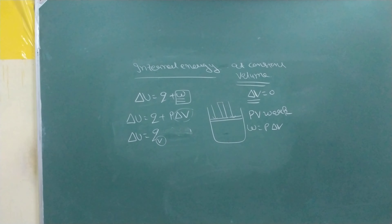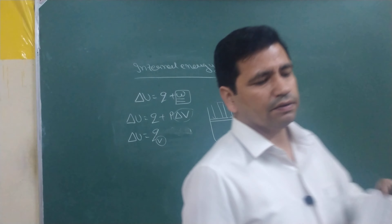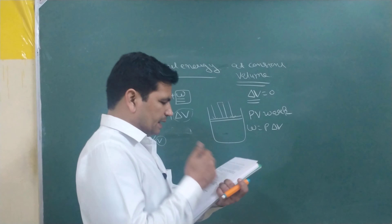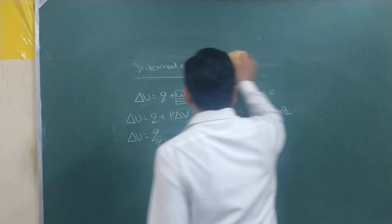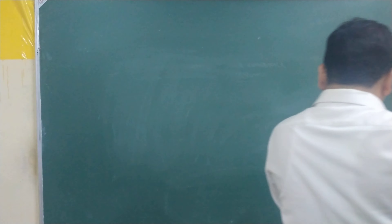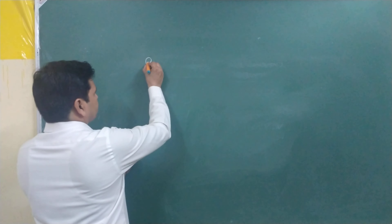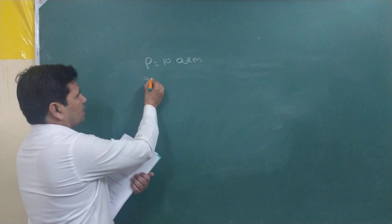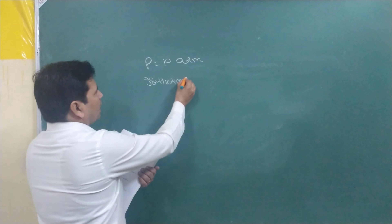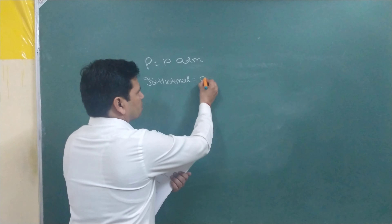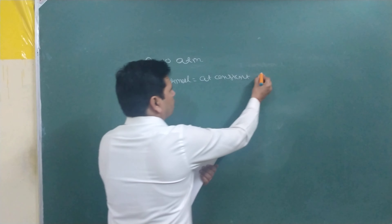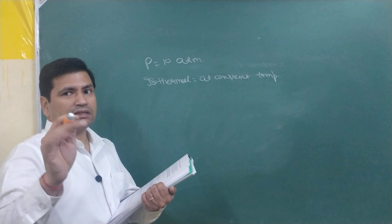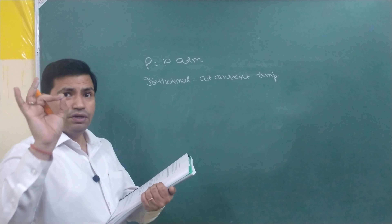Now let's look at a numerical problem we discussed last time. We have 2 liters of ideal gas at a pressure of 10 atmosphere. This gas expands isothermally — meaning the temperature does not change throughout the process — at 25 degrees Celsius.